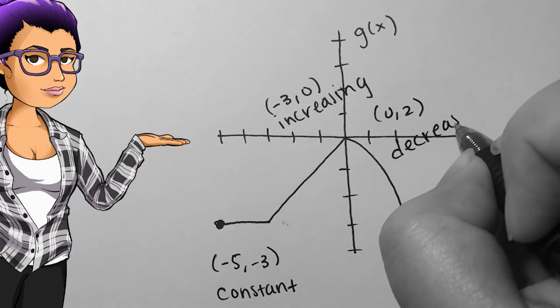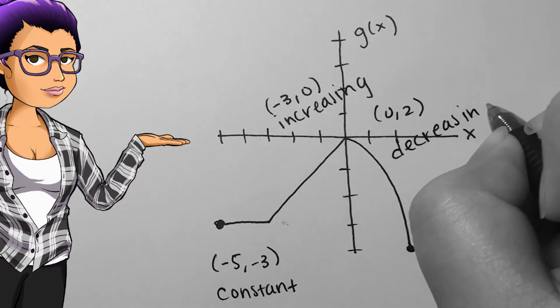After this, each output is smaller than the last, so 0 to 2 is an interval where we are decreasing.